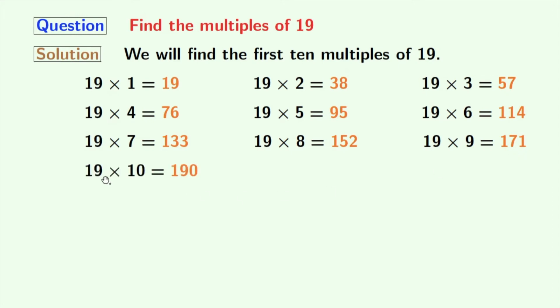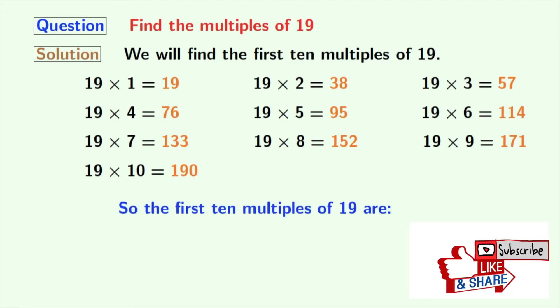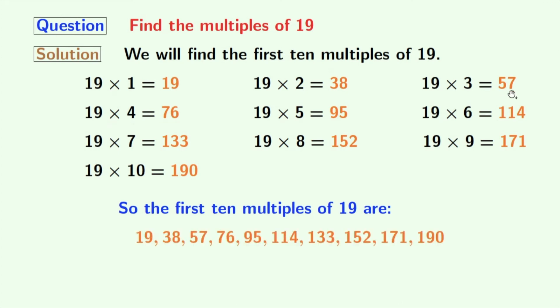Multiplication of 19 and 10 finally gives us 190. So look, we have obtained the first 10 multiples of 19 which are the orange ones. These are 19,